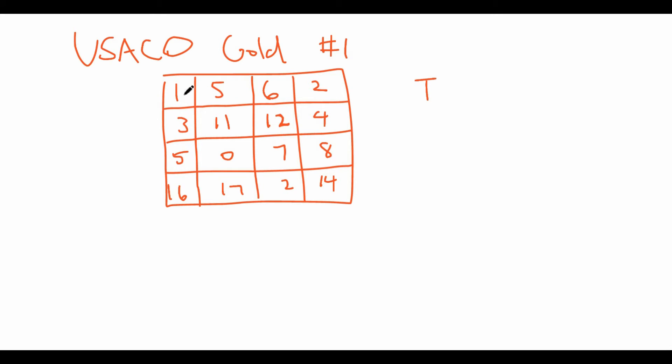And now the question is, what path should Bessie take such that she will take the least amount of time to get from the top left corner to the bottom right corner? So it might be a path sort of like this, where you will eat grass at 12 and 14.